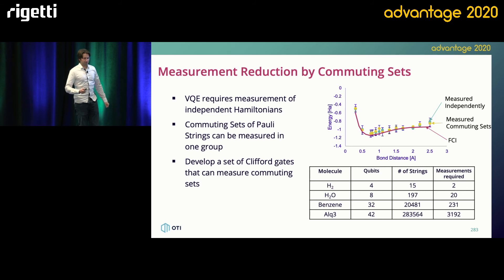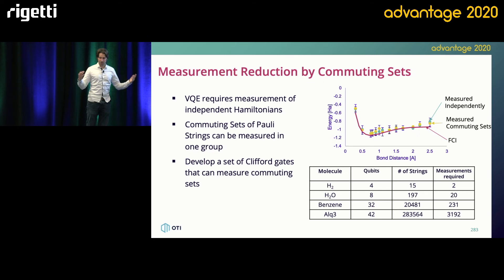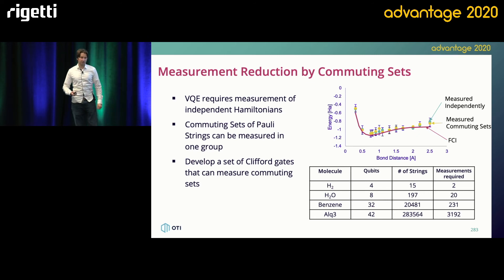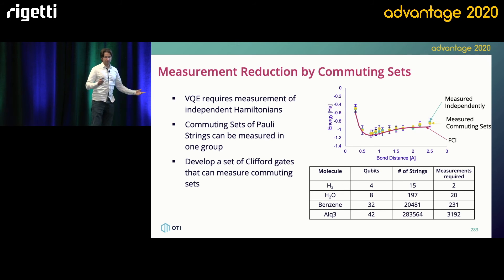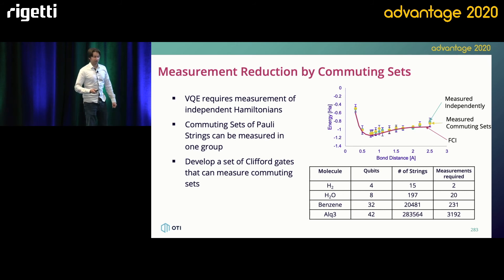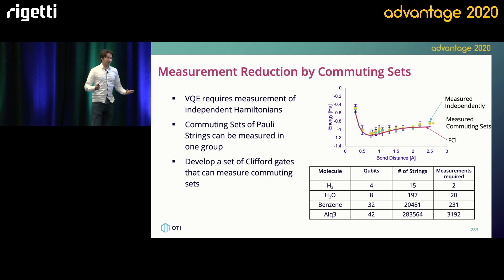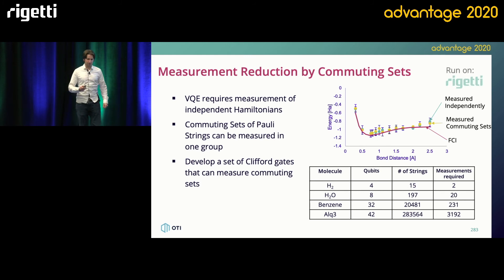But when you look at the number of measurements required for the Hamiltonian, we can get incredibly good scaling results. For something like AlQ3, you can get almost a factor of 10 to 20 reduction. So we're achieving outstanding time-scaling reductions by using these protocols.